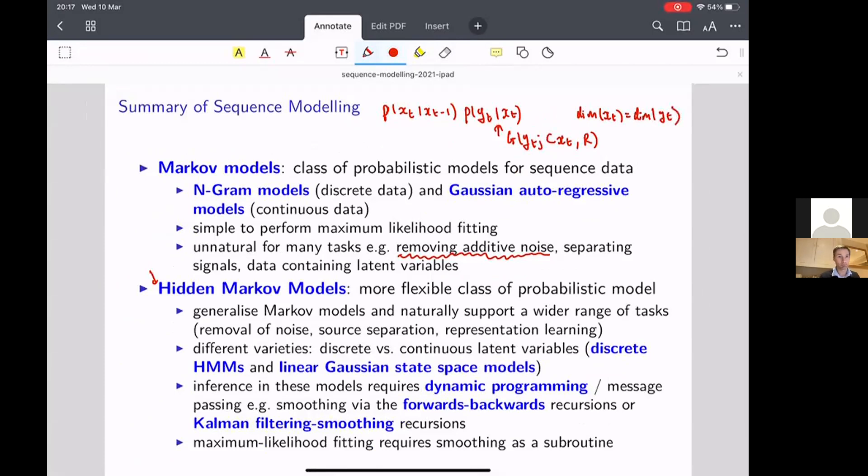which we're free to do if we're modeling, we can set the dimension of the latent variables to be the same as the Y_T's. And then we make the following choices: we'll set C equal to the identity matrix here, and we'll limit R to zero.